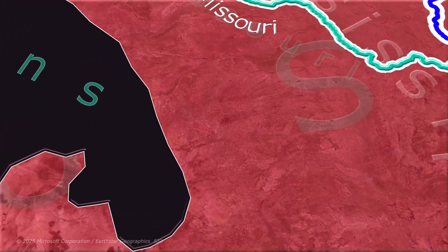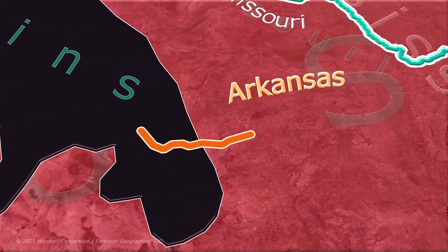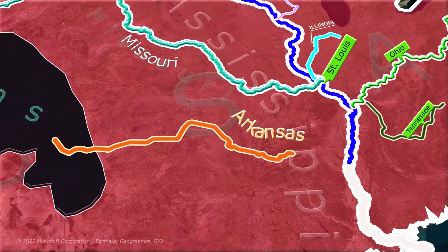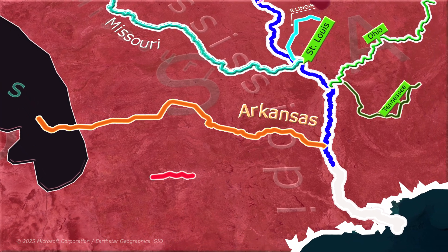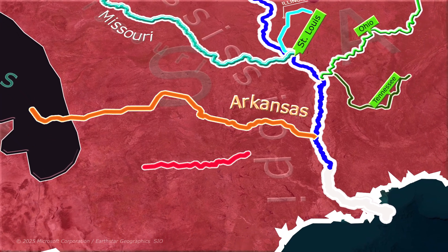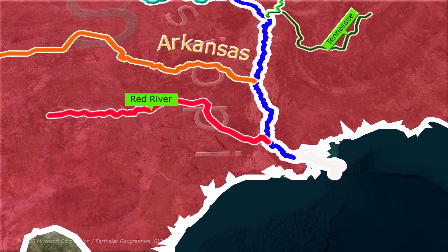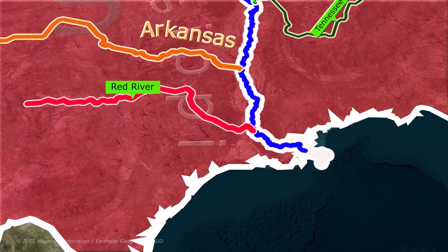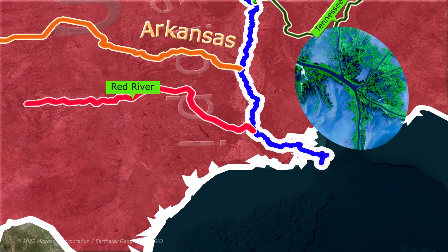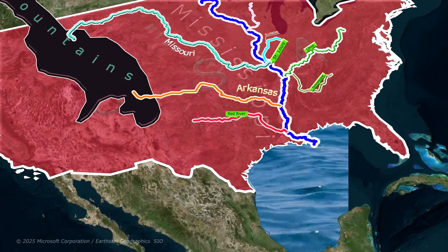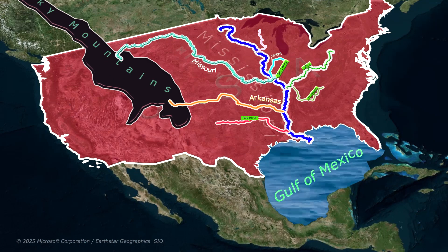After this, the Arkansas River, which originates from the Rocky Mountains, joins the Mississippi, and further downstream, the Mississippi is also joined by the Red River. Finally, the Mississippi River forms a distinctive bird's-foot-shaped delta and empties into the Gulf of Mexico.